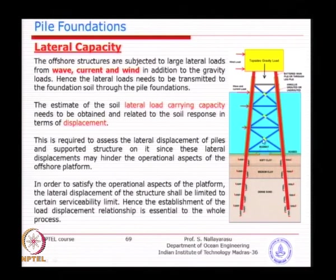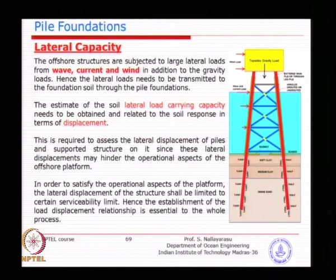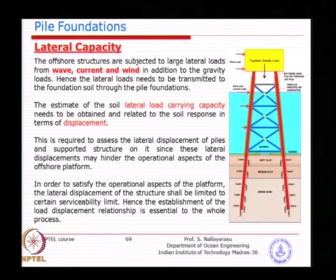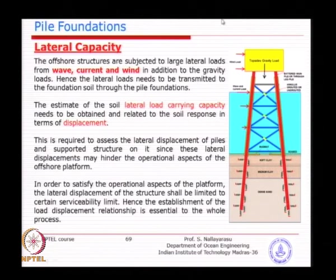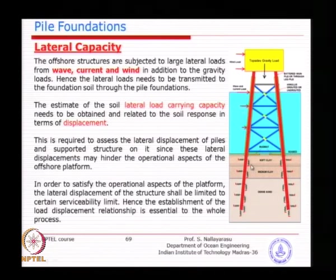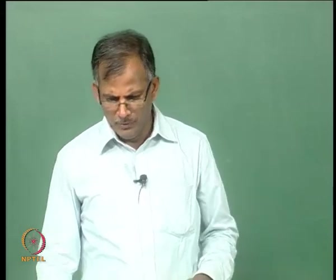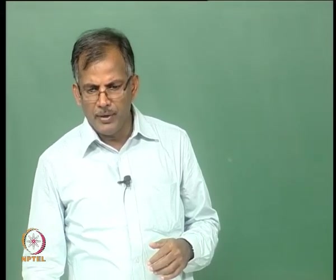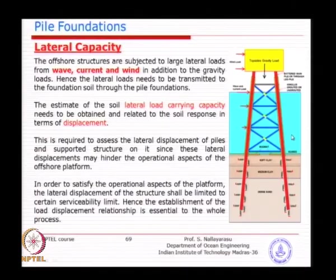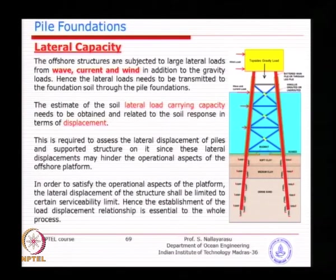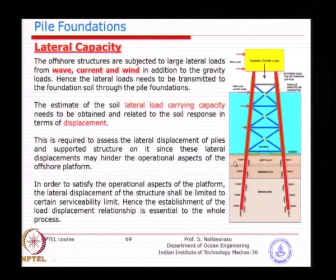We have already characterized the vertical springs — the frictional resistance between the pile and the soil — as linear or non-linear springs describing the characteristics. As soon as you apply the load, it gets transferred from the jacket to the pile and to the soil spring. Similarly, if you look at horizontal loads arising from wave, current, and wind trying to displace the structure, since the piles are driven through the structure, it will bend the piles and transmit the loads at the seabed level to the pile itself.